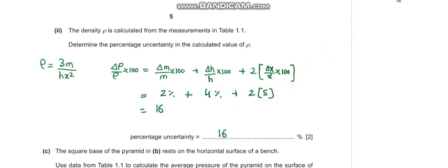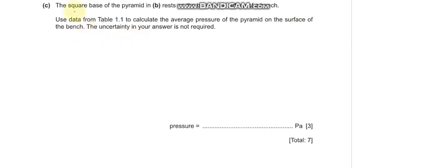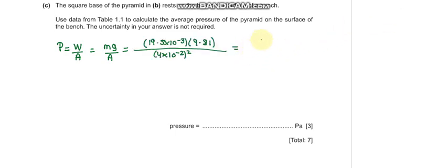Part C says: the square base of the pyramid rests on a horizontal surface on a bench. Use data from table 1.1 to calculate the average pressure of the pyramid on the surface of the bench. The formula is pressure equals force over area, where force is the weight, mg. Plugging in mass as 19.5×10⁻³ kg, g as 9.8, and area as (4×10⁻²)² square meters, and converting to kilograms and meters, our final answer is 120 pascals.